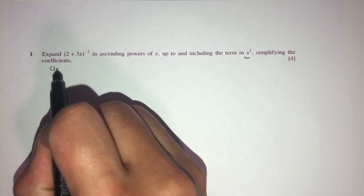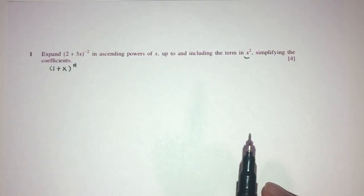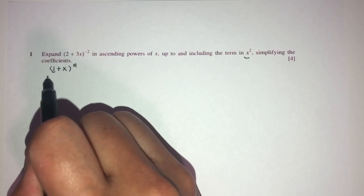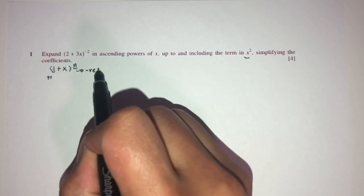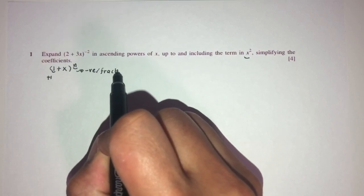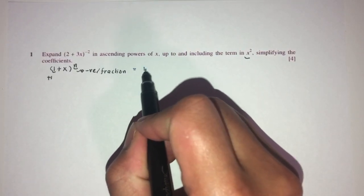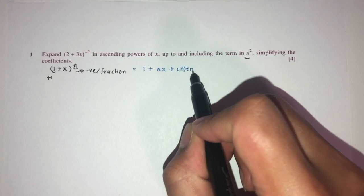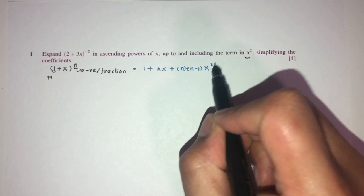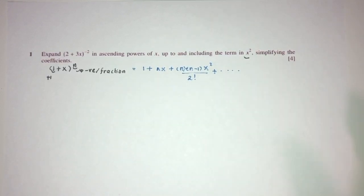For the expansion we have (1 + x)^n. For us to be able to use this expansion, this has to be plus 1 and the power has to be negative — or it could be a fraction in other cases, but here it has to be negative. Once those conditions are satisfied, this equals 1 + n·x + n(n−1)·x²/2! and it keeps going, but we only need up to x².